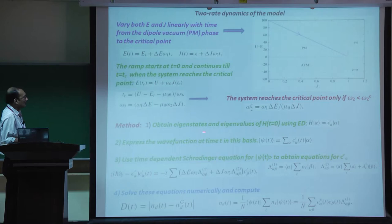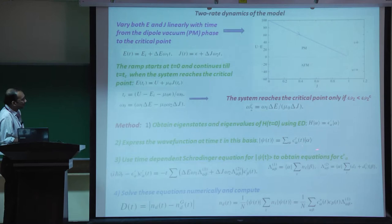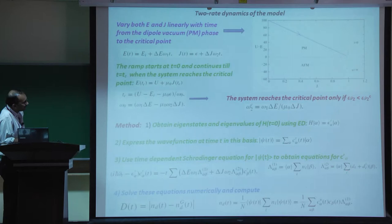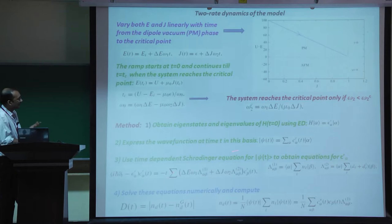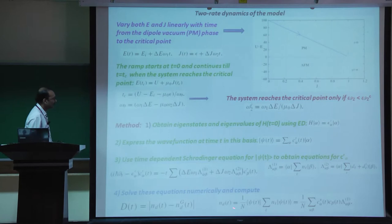The method used was exact diagonalization to compute all eigenstates and eigenvalues of H at t=0, then expanding the wave function in this basis and writing down the Schrödinger equation for the wave function coefficients c and c'. Lambda_1 and lambda_2 are simply the matrix elements of the dipole number operator and the dipole creation and destruction operator between states alpha and beta. From these coefficients, we can compute any expectation value.